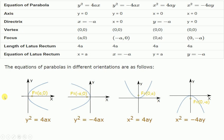For each standard parabola, the principal axis is: y = 0 (x-axis) for y² = 4ax and y² = −4ax, and x = 0 (y-axis) for x² = 4ay and x² = −4ay. The directrix equations are: x = −a, x = a, y = −a, and y = a respectively.